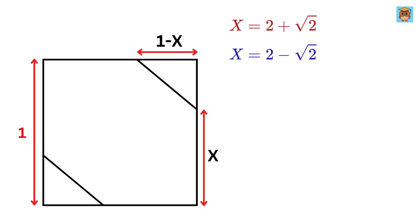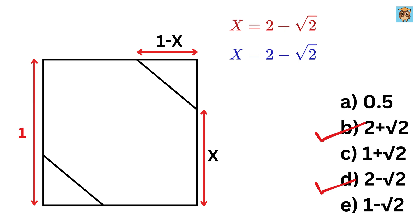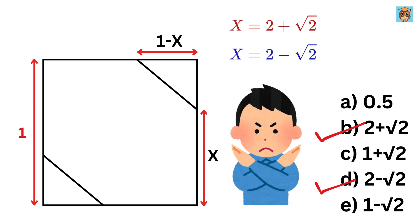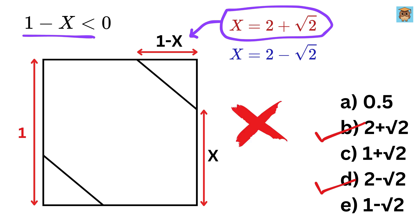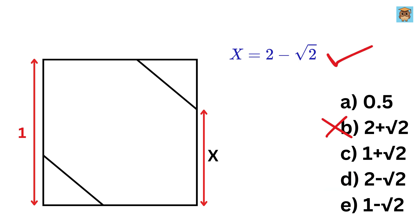We have two solutions, but we cannot mark both as correct. If X equals 2 plus root 2, then 1 minus X equals 1 minus 2 minus root 2, which is less than 0. But we cannot have a negative side length, so we must discard that solution. Therefore, our final answer is X equals 2 minus root 2, and the correct option is option D.